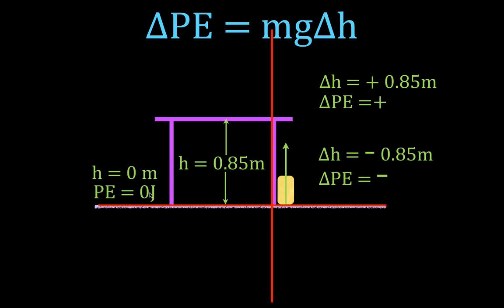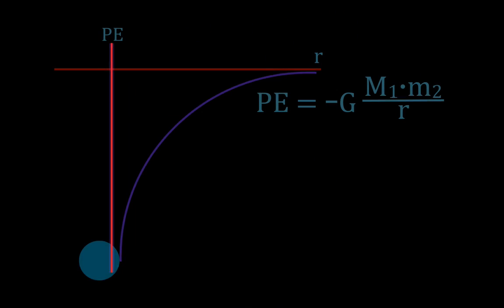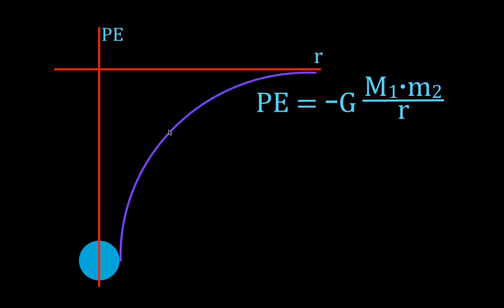The general idea is: when you move something away from the Earth's surface — move something up — you increase its potential energy. When you move something back down, you decrease its potential energy. I want to show you how we get that same result when we use the more general equation.